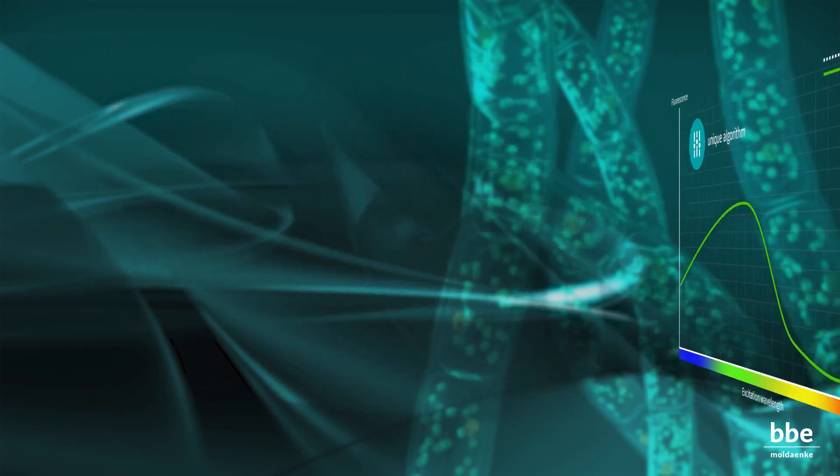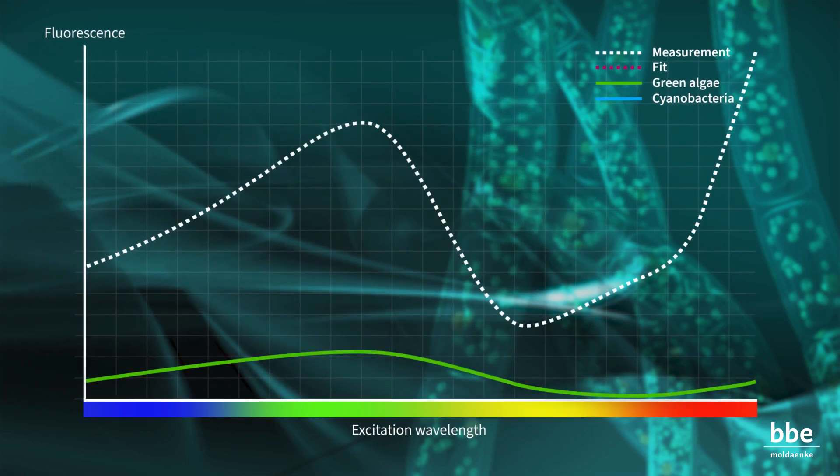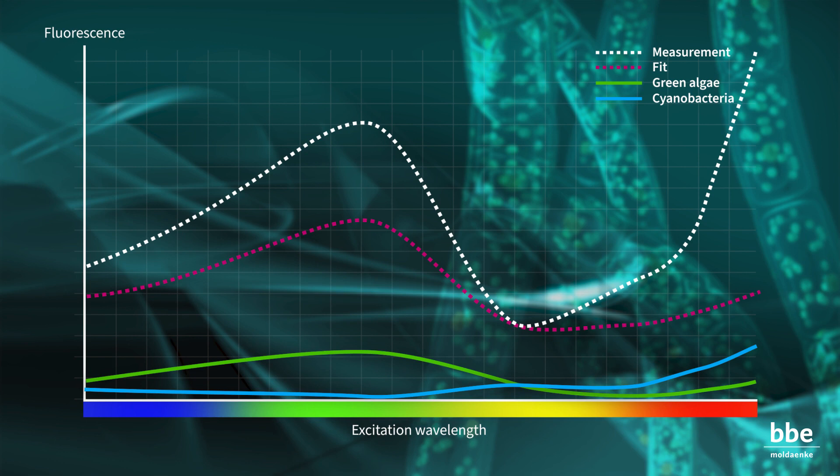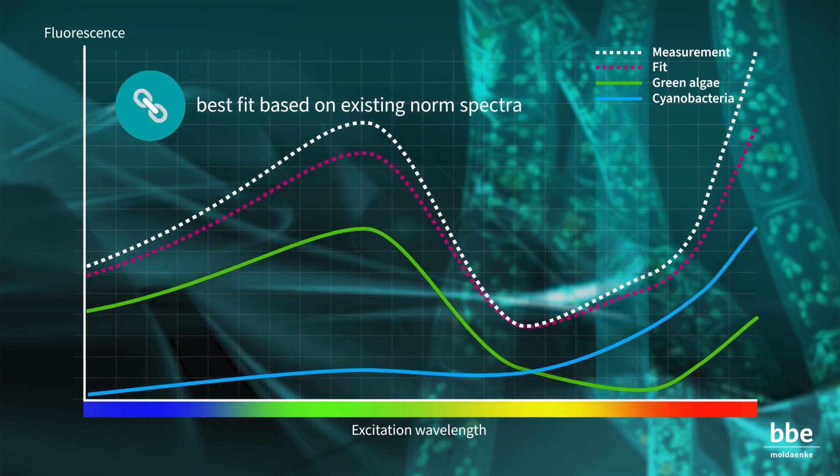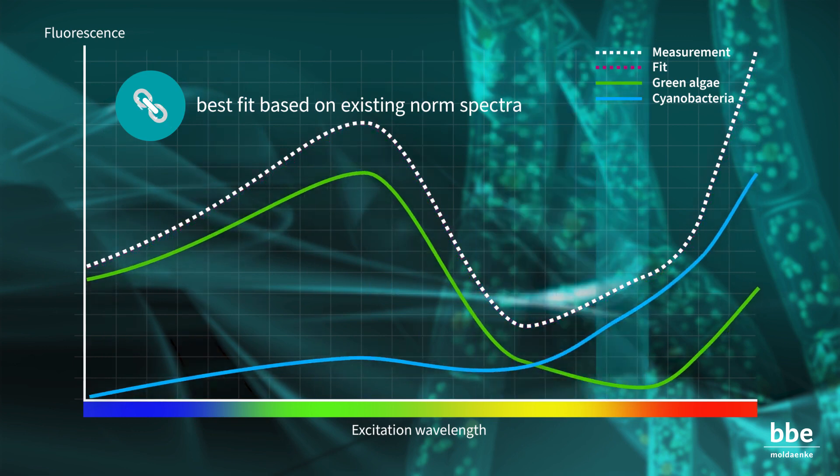Looking at a measurement of a sample with two algal groups, the fluorescent spectrum may look like this. Again, the software searches for the best match. In this case, the combination of two norm spectra.